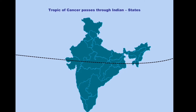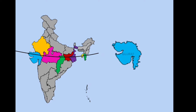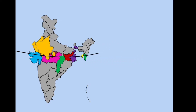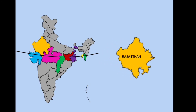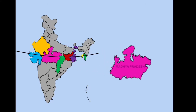Here you can see the Tropic of Cancer passes through the Indian states. The Tropic of Cancer passes through eight states in India. They are Gujarat, Rajasthan, and Madhya Pradesh.